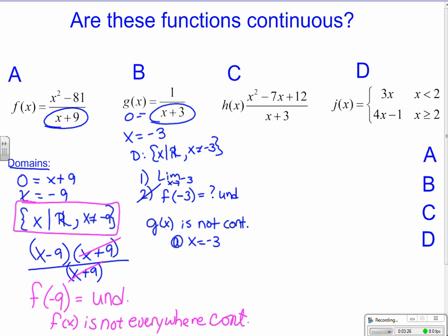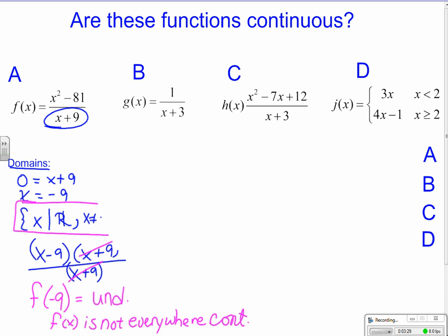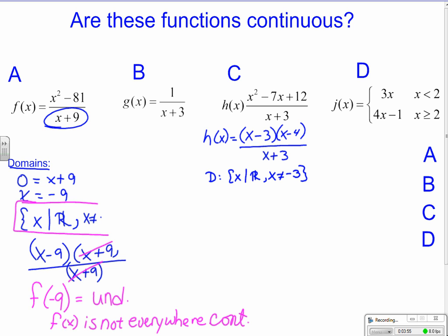For letter C, I'll do a little factoring to get a clearer look at this function. It factors into x minus 3 times x minus 4, all over x plus 3. The denominator indicates the domain is all x's except where x equals negative 3. Nothing cancels with it, so there is no way to plug in negative 3 and get a y value out. It's undefined at h of negative 3, so h of x is undefined there — not continuous.